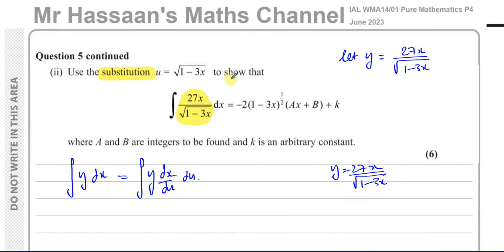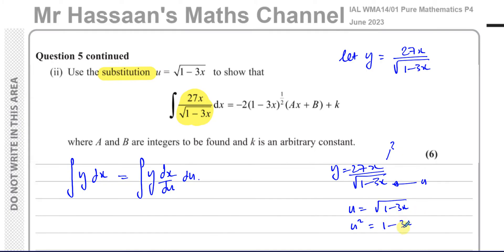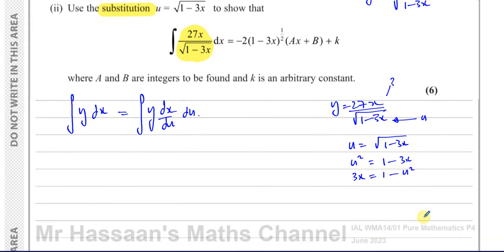We know y equals 27x over the square root of 1 minus 3x. The square root of 1 minus 3x is going to be u. To find x in terms of u, we rearrange: u equals the square root of 1 minus 3x, so squaring both sides gives u squared equals 1 minus 3x. Solving for x gives x equals (1 minus u squared) over 3.